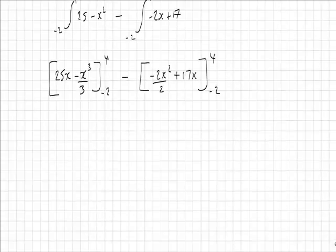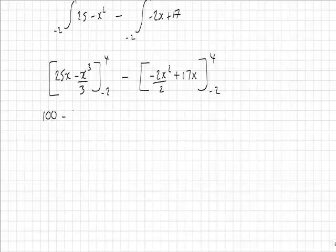So if we deal with these separately, well 25 times 4 is 100, minus 4 cubed is 64 over 3, take away minus 50, minus 2 cubed is minus 8, so plus 8 thirds.